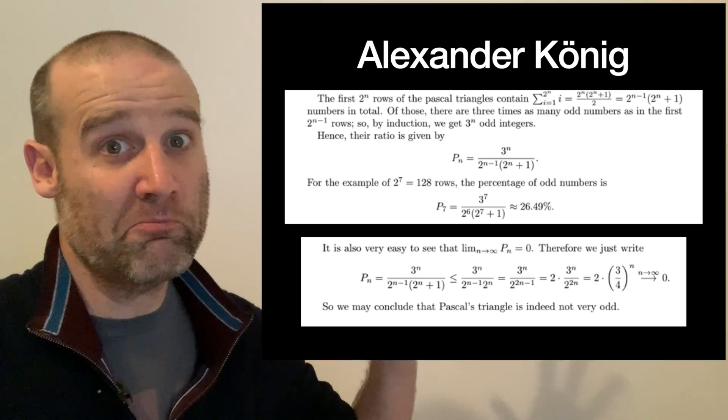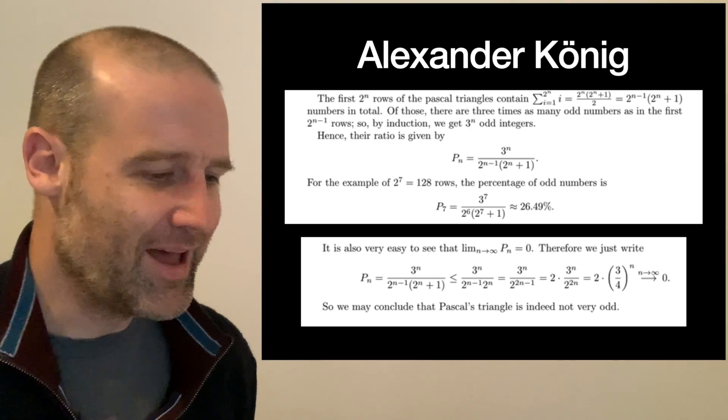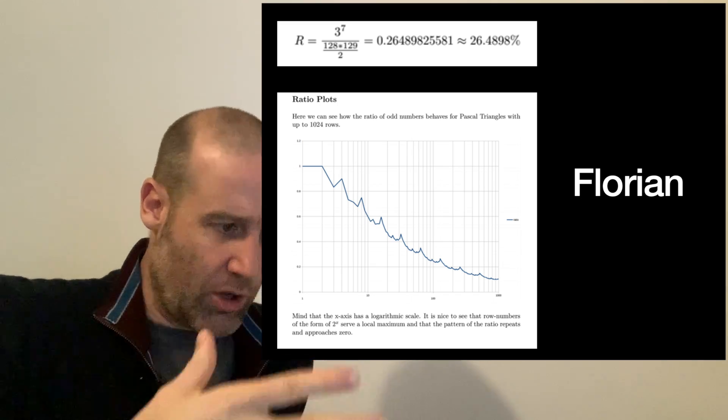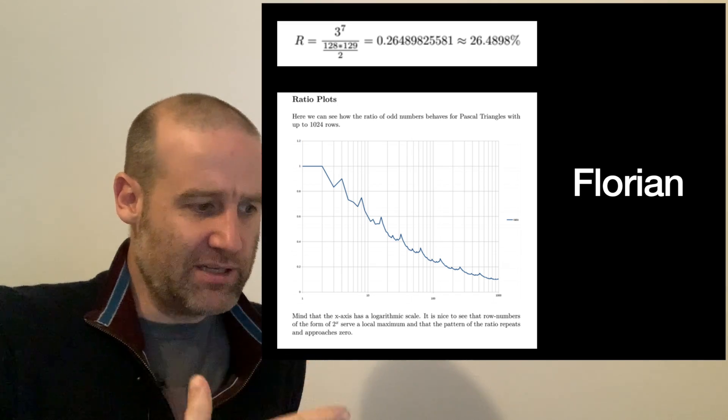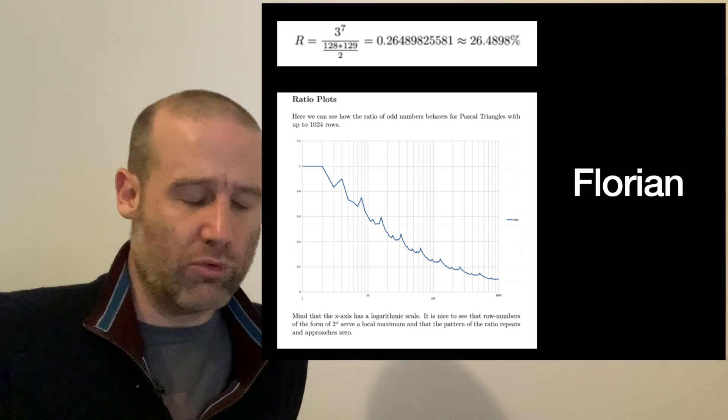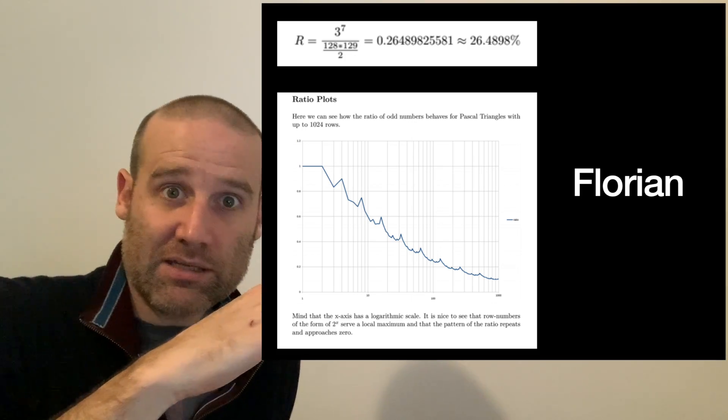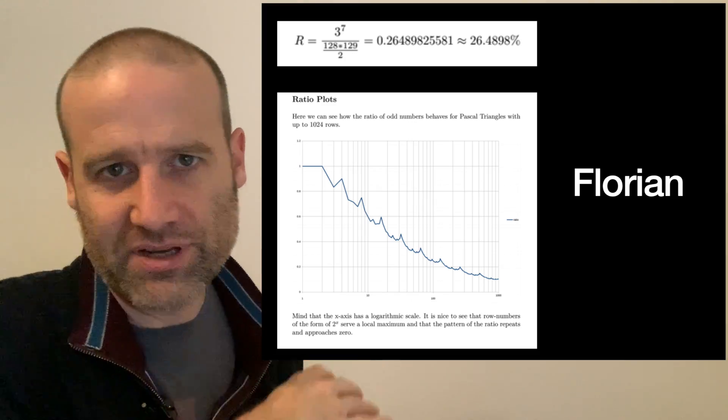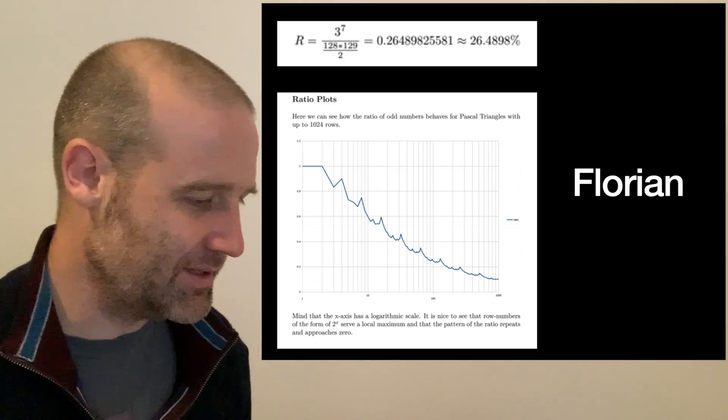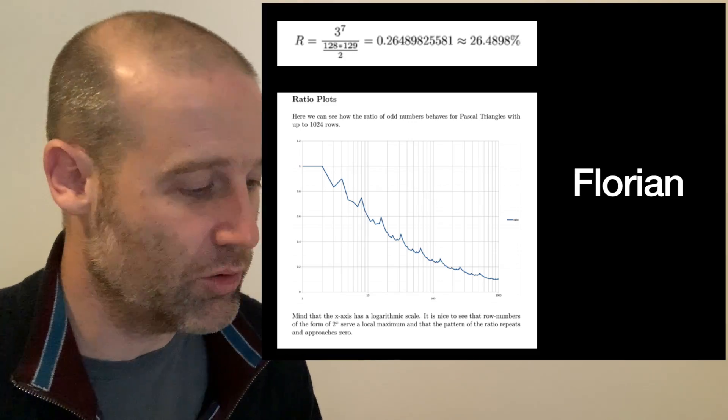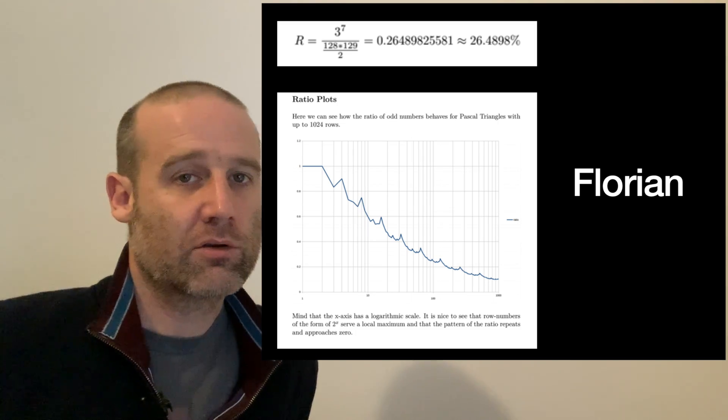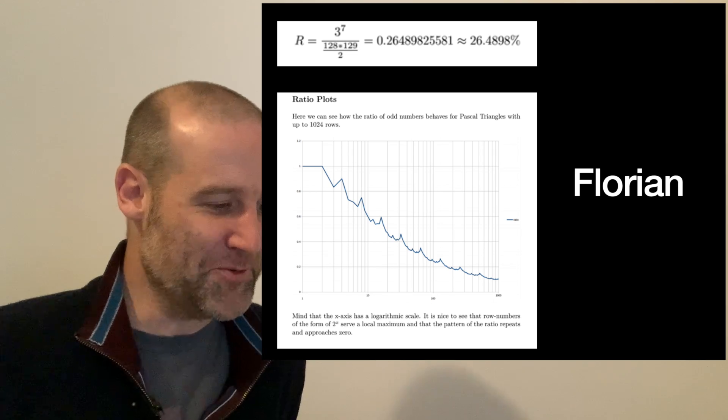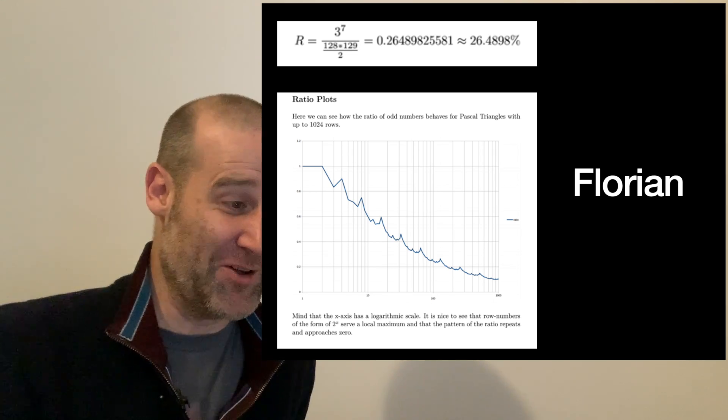Florian here did a plot. This is a log plot showing the percentage and how it goes down as you have more and more rows. Those spikes, that's whenever you hit a power of two and then a whole flood of odd numbers comes in at once. It's amazing what a sight to behold, one of nature's greatest spectacles: the migration of the odd numbers in the power of two rows of Pascal's triangle.